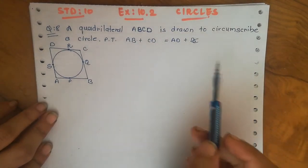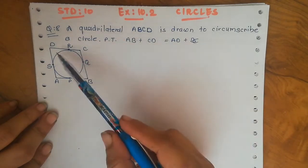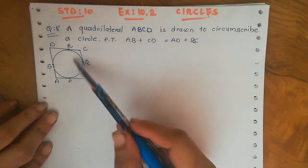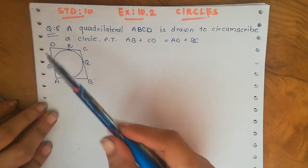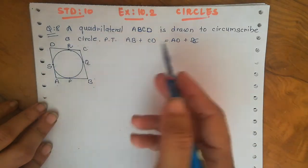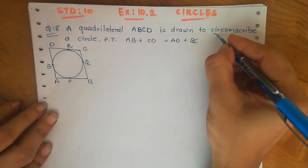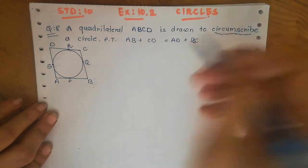A quadrilateral ABCD is drawn as you can see in the figure. ABCD is drawn to circumscribe a circle, and we need to prove that AB plus CD equals AD plus BC — that means the sum of two opposite sides of the quadrilateral equals the sum of the other two sides.